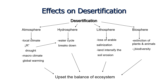What are the effects of desertification? Desertification impacts all four spheres of the ecosystem: atmosphere, hydrosphere, lithosphere, and biosphere. In the atmosphere, local climate changes — less precipitation, more droughts, and global warming disturb the system. In the hydrosphere, the water cycle breaks down. In the lithosphere, less arable soil is available and salination increases. In the biosphere, plant and animal extinction reduces biodiversity. All these reasons upset the balance of an ecosystem, which is the interaction between plants, animals, and the physical environment.